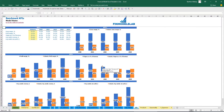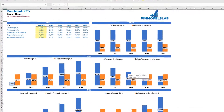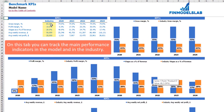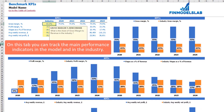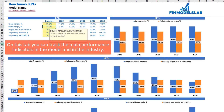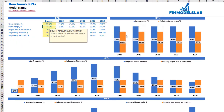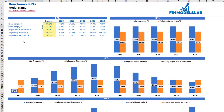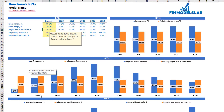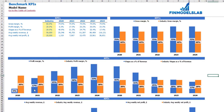On the benchmarks KPIs tab you can find your main industry-specific KPIs, which are changeable for your industry and country. For example, a gross margin industry benchmark of 60% is shown in orange, while your model's gross margin is in blue. Similarly, you can change the profit margin benchmark — for example 20% — and see that for the first two years your profit margin is below the industry benchmark, while from 2022 onward it exceeds it. You also have wages as a percentage of revenue, average weekly revenue, and average weekly net profit benchmarks.